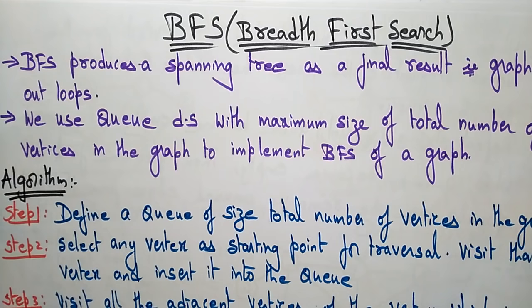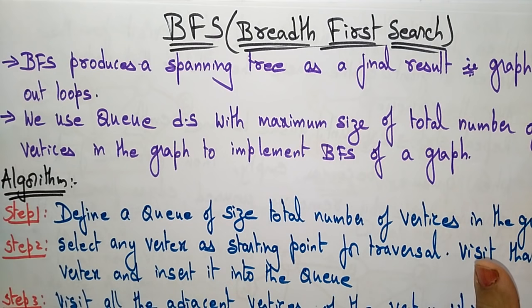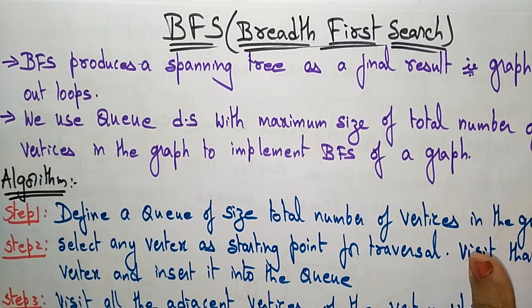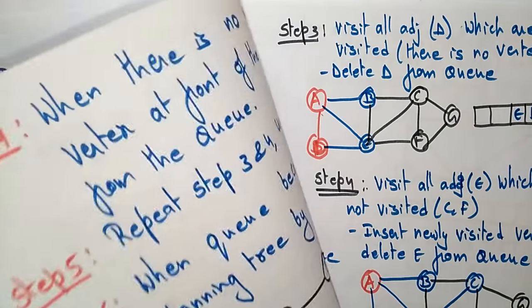Let us continue with graph traversal. In the previous video I explained about Depth First Search, now let us see Breadth First Search. The main difference between DFS and BFS is that DFS uses a stack data structure, whereas BFS uses a queue. In DFS we use backtracking, but in BFS we don't.